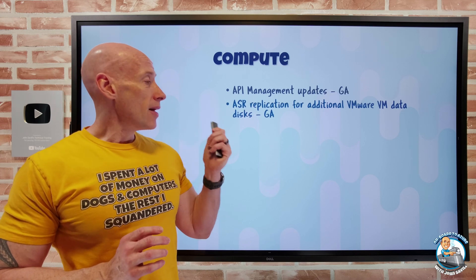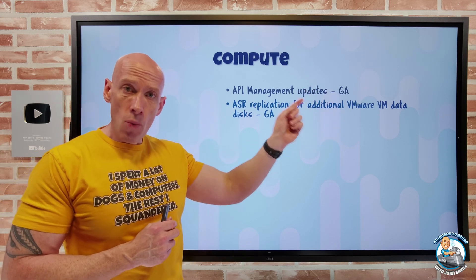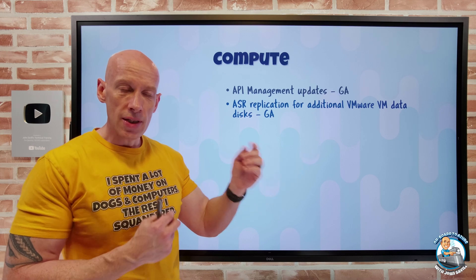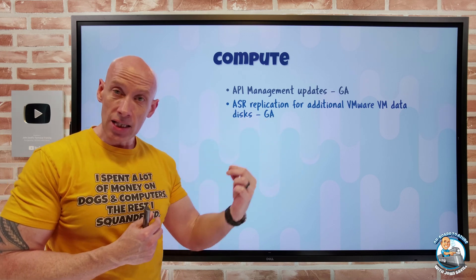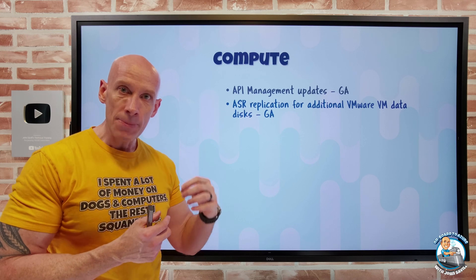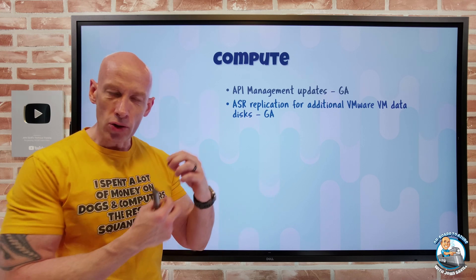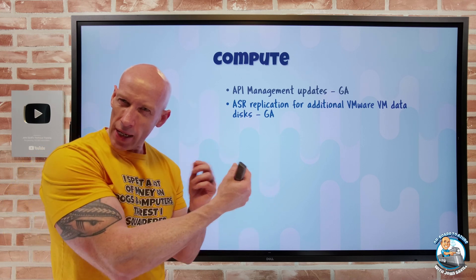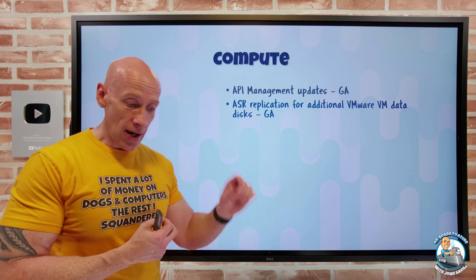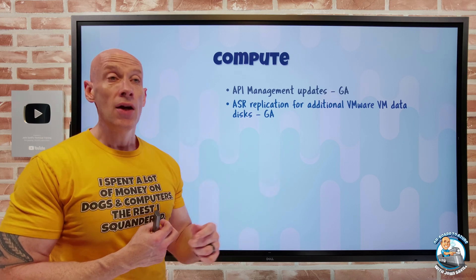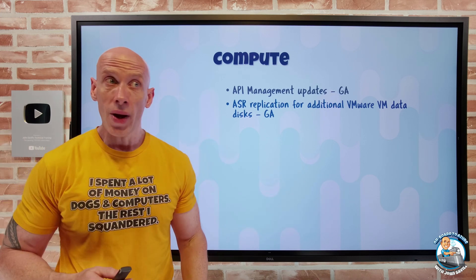For Azure Site Recovery, for my VMware VM workloads doing replication, I can now add data disks to an existing VMware VM and enable them for replication. It's now a lot easier — you'll see a health warning when you add a new data disk saying this disk is not protected, and you can choose to protect it. Once that initial replication has completed, that health warning will go away.